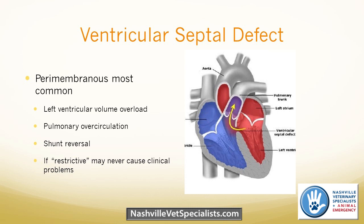Regarding whether these conditions would be treated the same in cats: for PDA, yes. For balloon valvuloplasty for straightforward pulmonic stenosis, they could be candidates, but we don't see as much pulmonic stenosis or subaortic stenosis in cats. For subaortic stenosis, cats tend to have primary aortic stenosis rather than subaortic stenosis, which is still uncommon. For aortic stenosis in cats, we'd still start a beta blocker, but they wouldn't be candidates for a cutting balloon. With perimembranous VSDs, blood flows from the left ventricle across the defect into the right heart, right under the pulmonary artery, mainly going out to the lungs and back — resulting in left-sided volume overload and potential left-sided dilation.